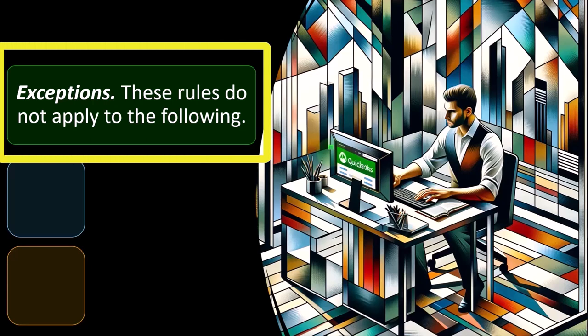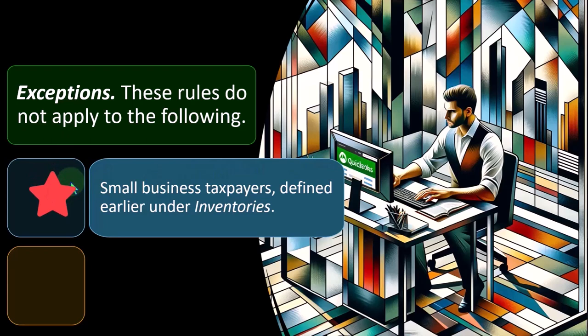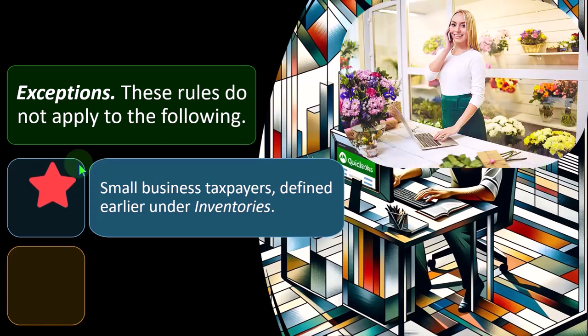Exceptions. These rules do not apply to the following. We always have small business taxpayers, defined earlier, where we might have an exception under inventories. Inventories are an area that could cause problems, forcing us to deviate from a cash basis to an accrual basis. However, there could be some exceptions. Therefore, especially for small businesses dealing with inventory, you want to think in depth about how exactly your business is going to work logistically, and what tax basis would be best for you.